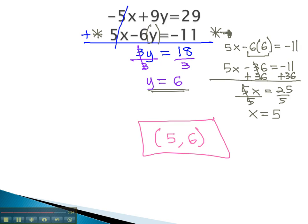The addition method is nice when we can add the two equations together on left and right side and eliminate one of the variables as we add them together.